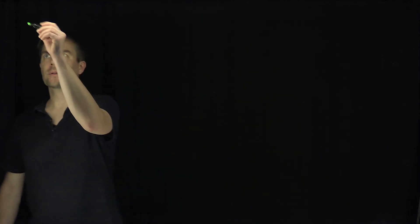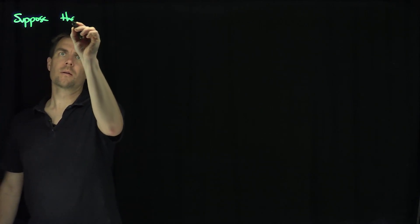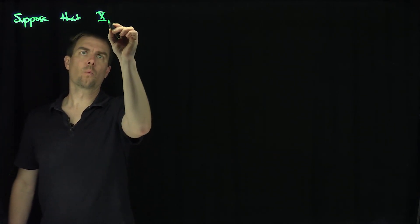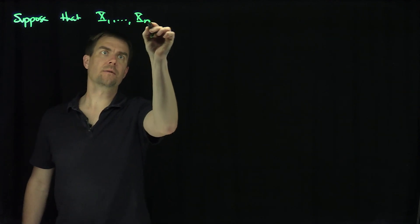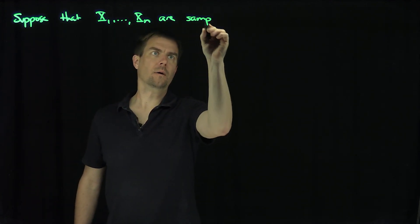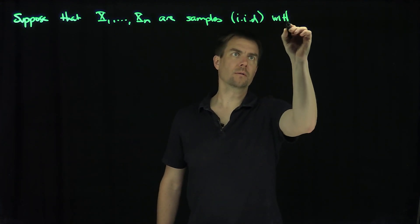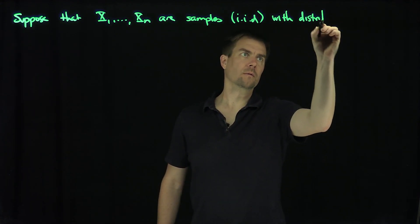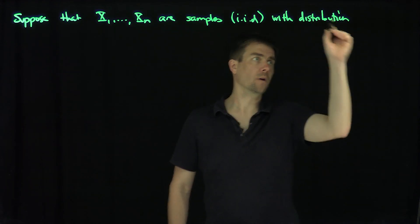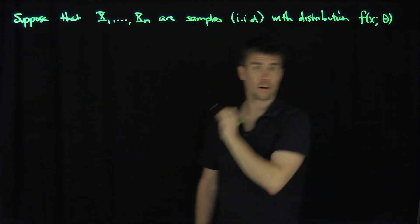Hello students. In this video we'll discuss Fisher information in two different formulations of how we can compute it. Let's suppose that x1 through xn are iid samples with distribution f of x depending on some parameter theta.